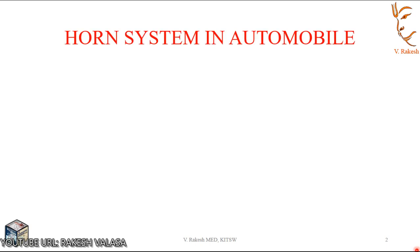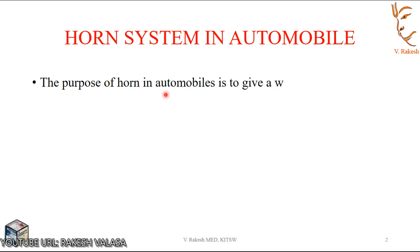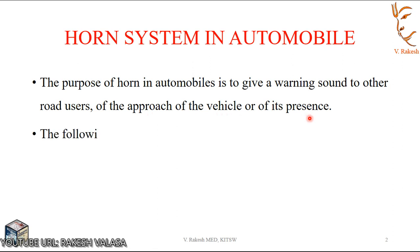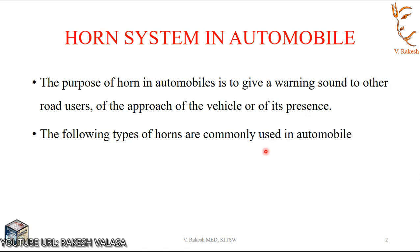Let us see the horn system in automobile. The main purpose of a horn in automobile is to give a warning to other road users of the approach of the vehicle or of its presence. Thus, the horn is a safety device employed on vehicles. These horn systems are basically divided into three types.